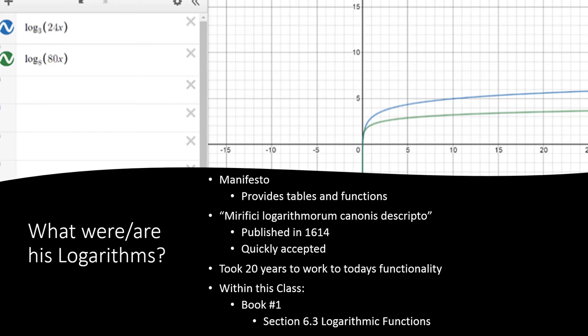The title of his manifesto is Mirifici Logarithmorum Canonis Descripto. It was published in 1614, and one thing to quickly note that's important is that it was quickly accepted.